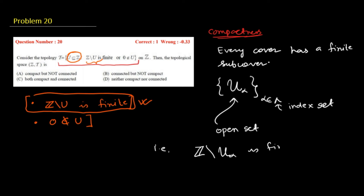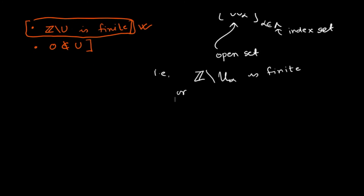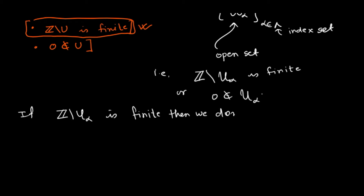Each U_alpha being open means that Z minus U_alpha is finite, or U_alpha does not contain 0. If Z minus U_alpha is finite, then we are done, because only finitely many points are remaining and those finitely many points can be covered by finitely many sets.